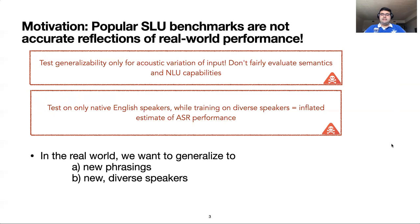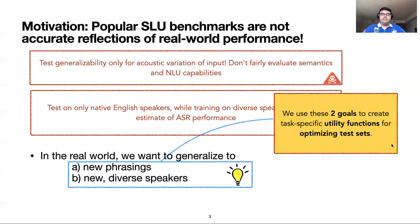Hence, in this work, we create robust test sets that can test model generalizability to diverse speakers and utterances using subtask-specific utility functions that individually assess different components of the end-to-end model.